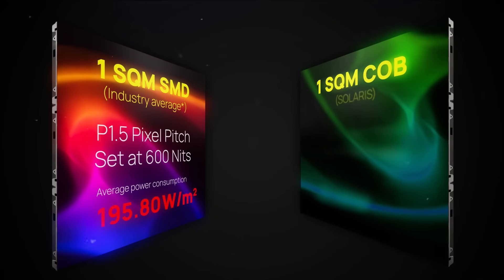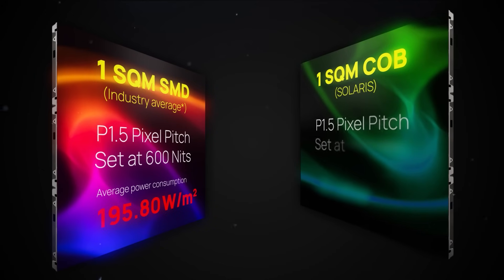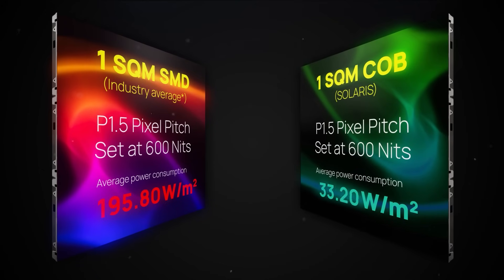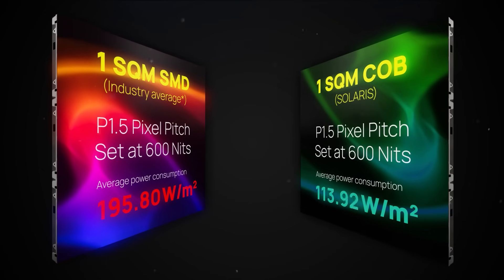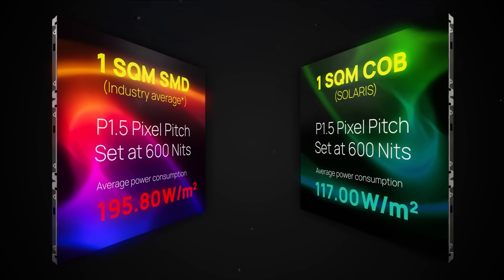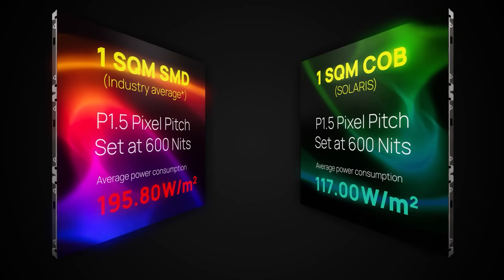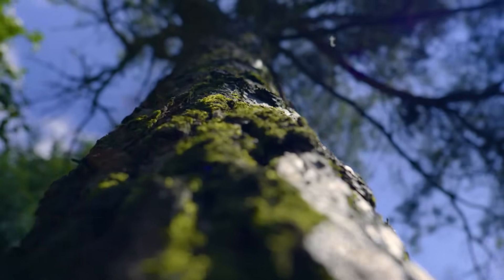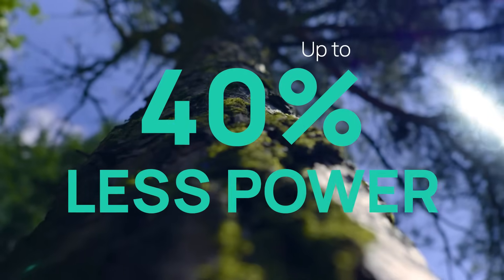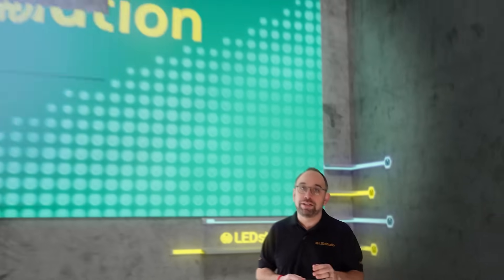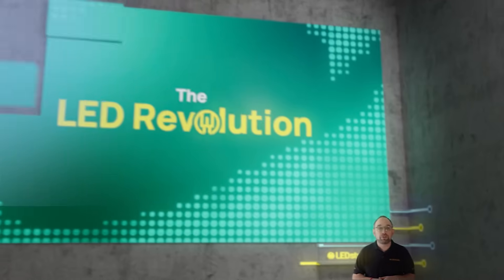Our Solaris COB at the same pitch and brightness is running at only 117 watts per square meter, which is 40% less power. That's a huge savings both upfront and, more importantly, over the life of the display, and those savings stack up very quickly as your display grows in size.